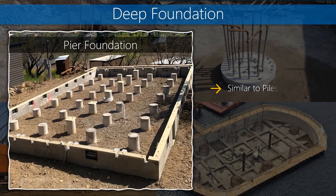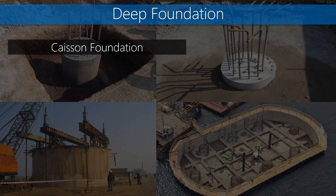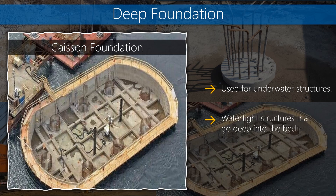The pier foundation is similar to piles, but piers are installed by digging holes and filling them with concrete. The caisson foundation is used for underwater structures — caissons are watertight structures that go deep into the bedrock.